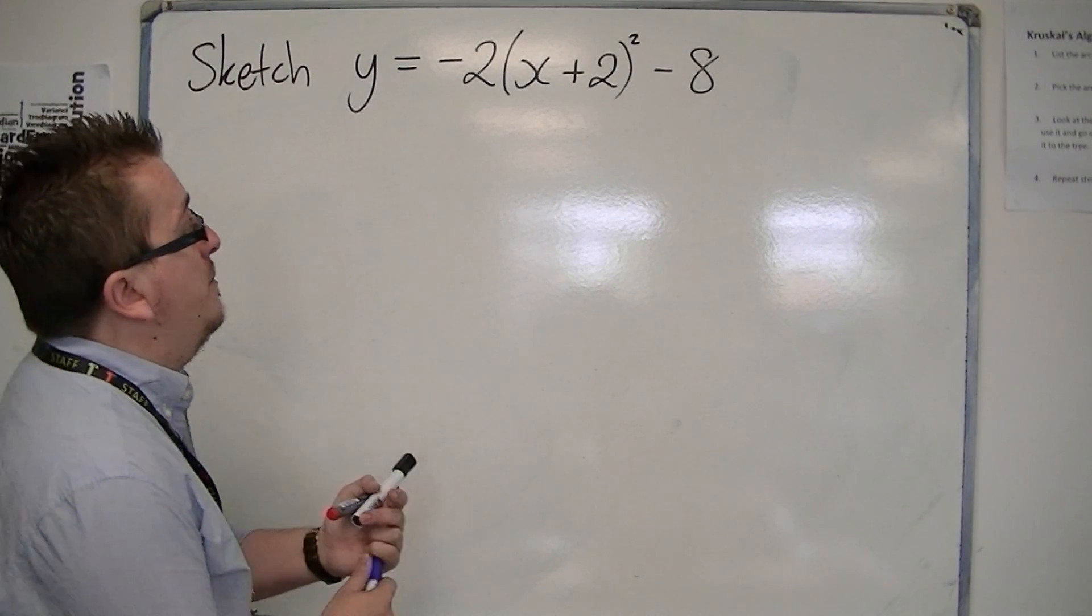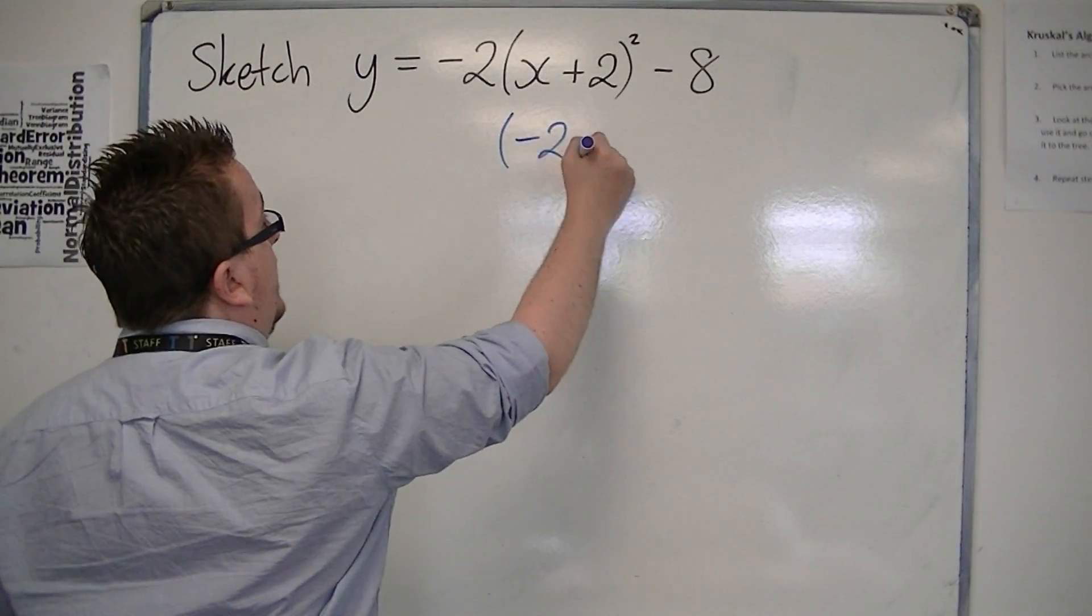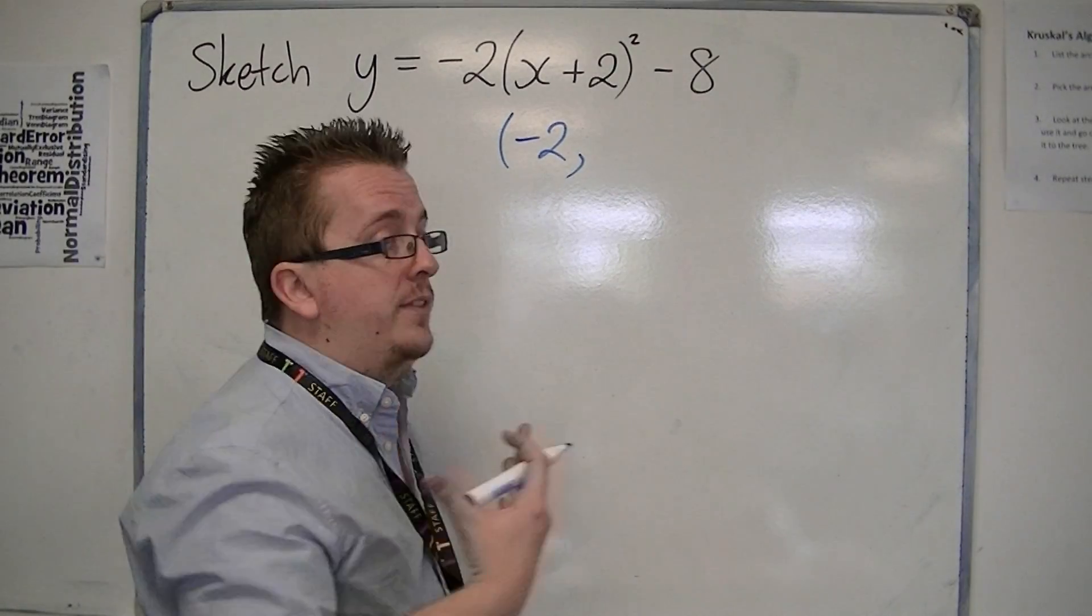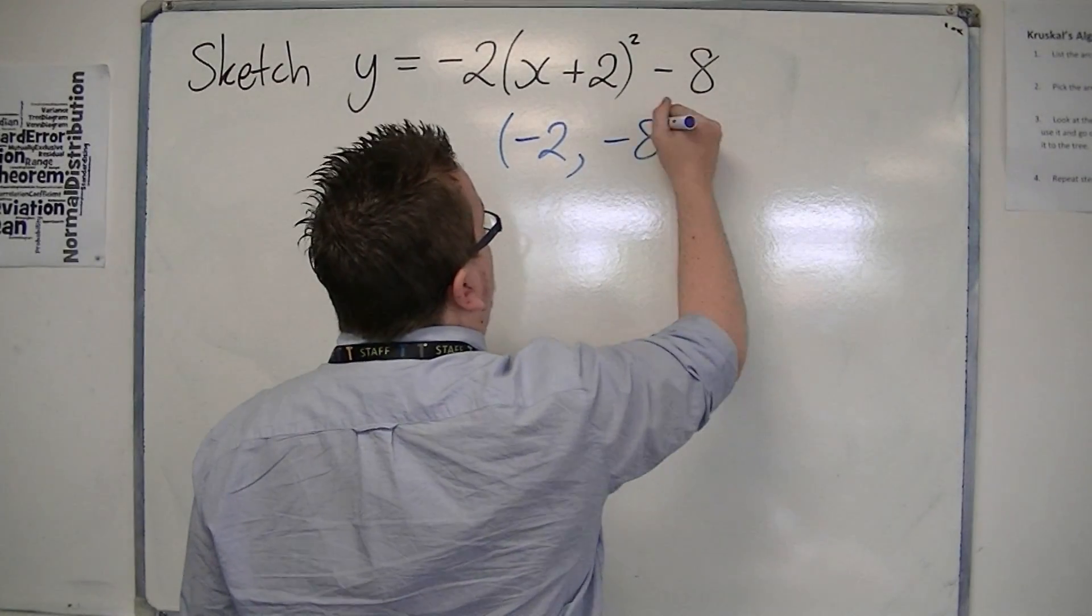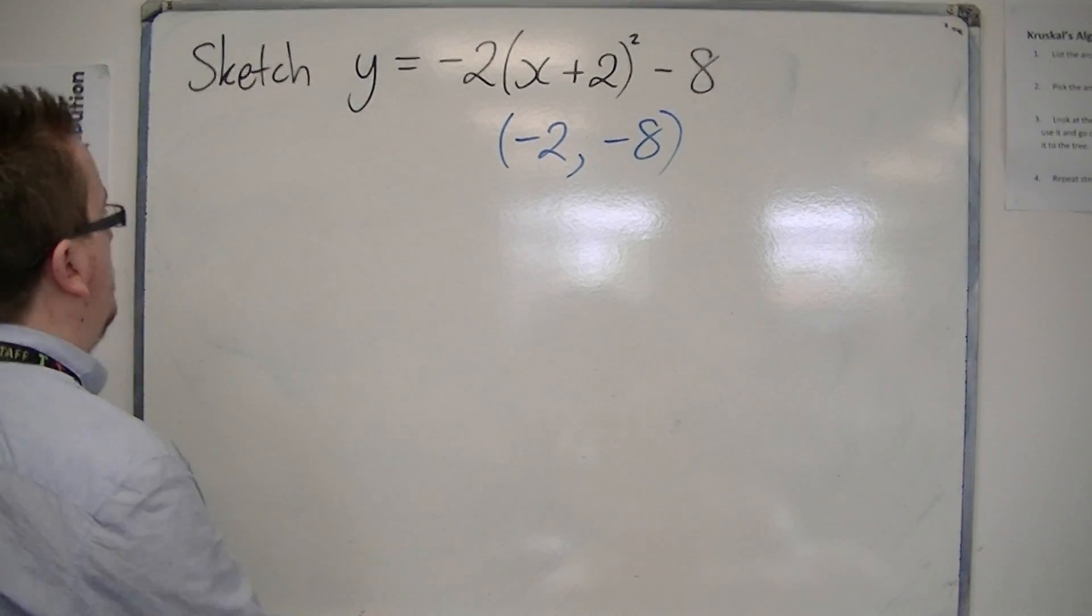So we should, by now, be thinking that for the vertex, we change the sign of the number that's inside the bracket, and we take the number that is outside the bracket as is. So we know that the curve has a vertex at minus 2, minus 8.